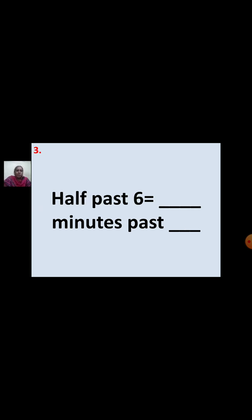Third question: Half past 6 equal to dash minutes past dash. 1 hour equals 60 minutes, so half an hour equals 30 minutes — half of 60 is 30. Your answer is either half past 6 or 30 minutes past 6.